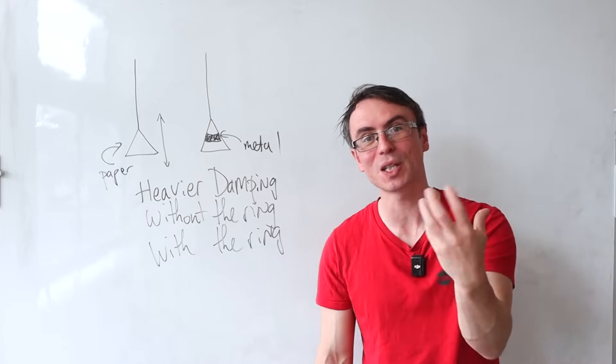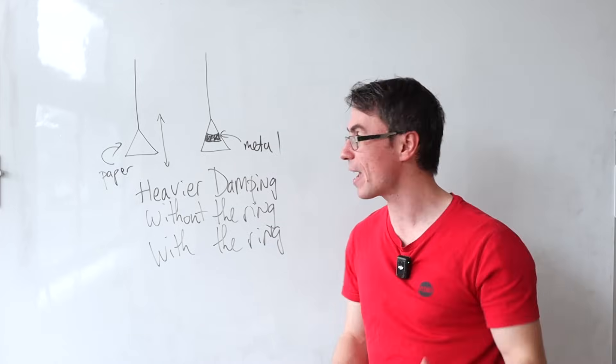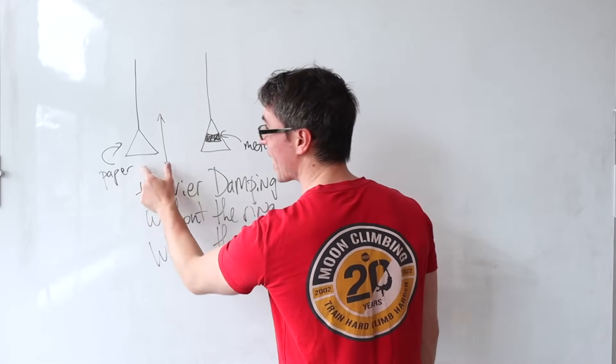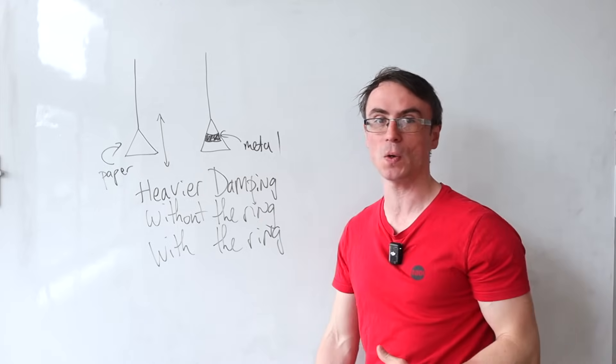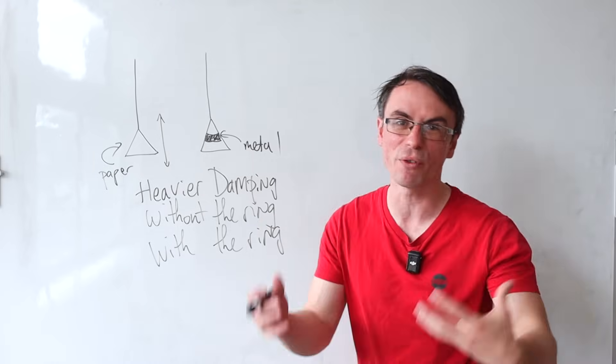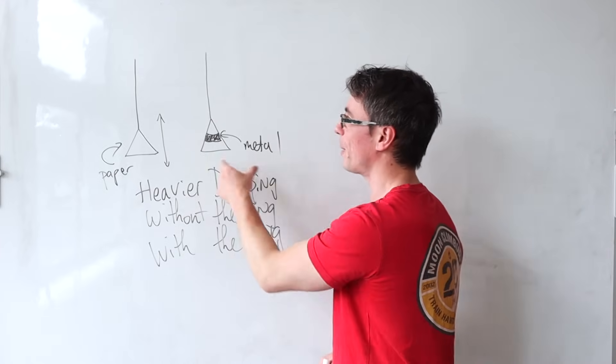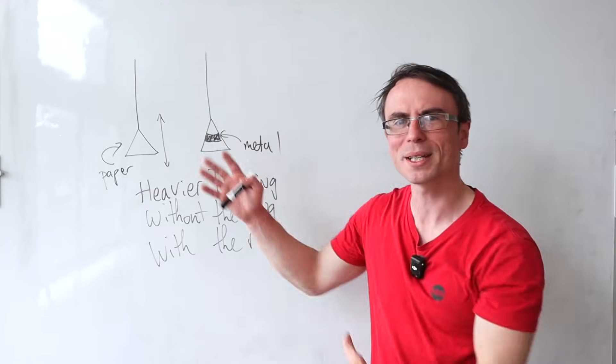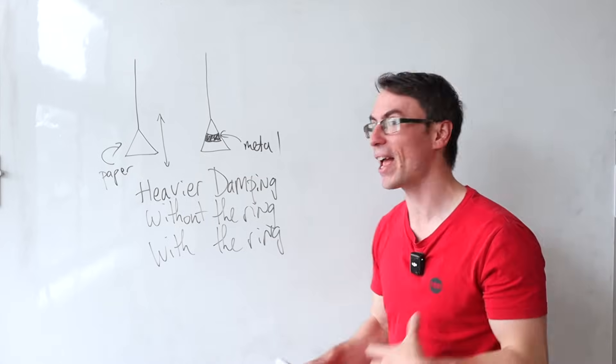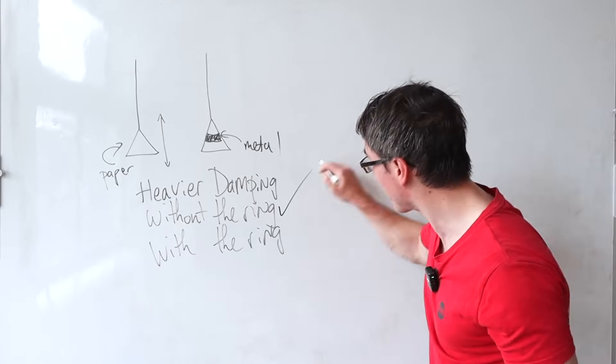Therefore, the work done by the resistive forces, i.e. air resistance, will take more of a proportion of the energy of the paper cone. Because air resistance will be the same, or very similar, because it mainly depends on cross-sectional area, assuming that they're moving at similar speeds. So the correct answer is that we have heavier damping without the ring.